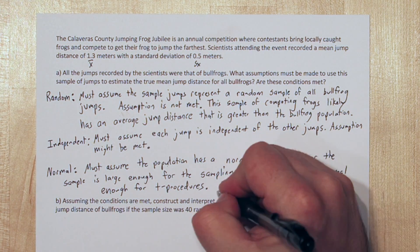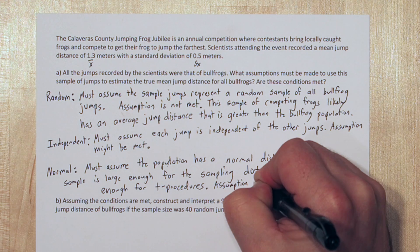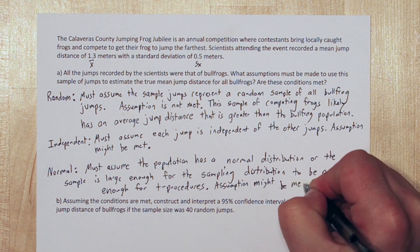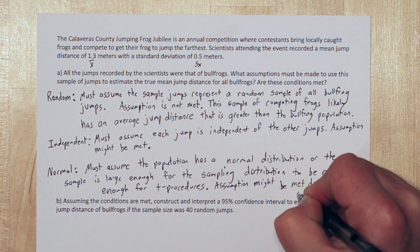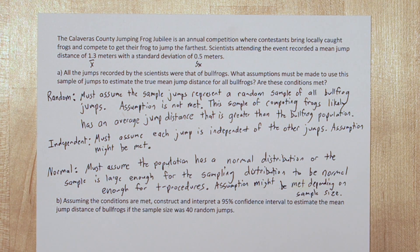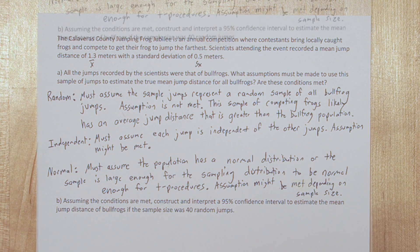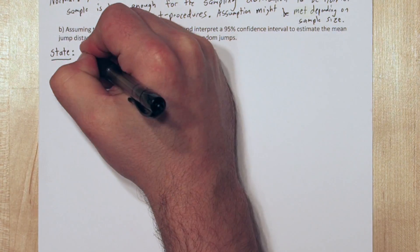This is likely a met assumption. As long as a scientist grabbed at least a decent sized sample of frogs, say 15, 20, or 30, or much more, we should have the normal condition met. Let's use the four step process on this one.